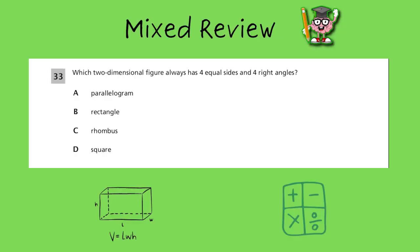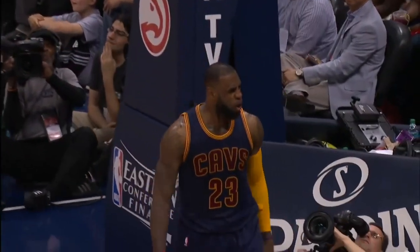Which two-dimensional figure always has four equal sides and four right angles? We already went over this a few problems ago. And just a reminder, it could only be a square. So it's another way of asking the same question. Come on, man. That's too easy.